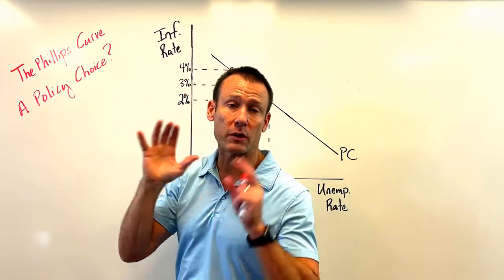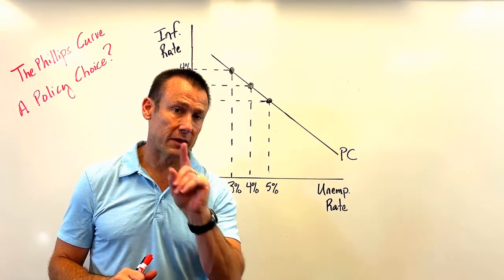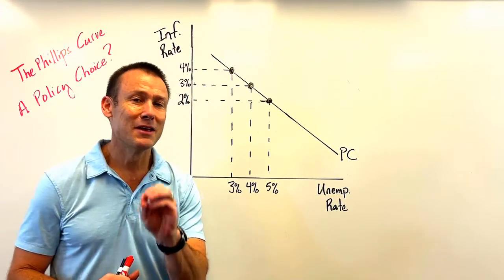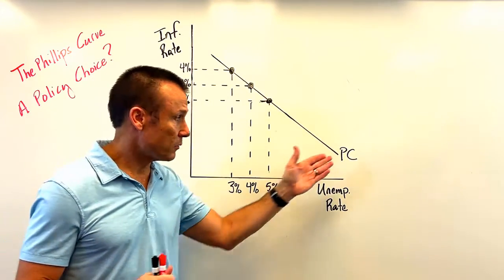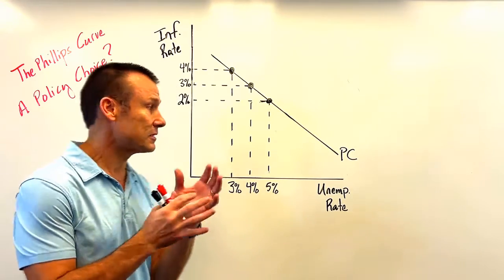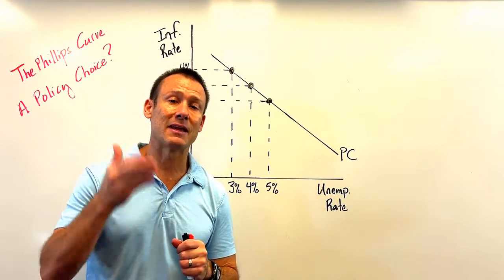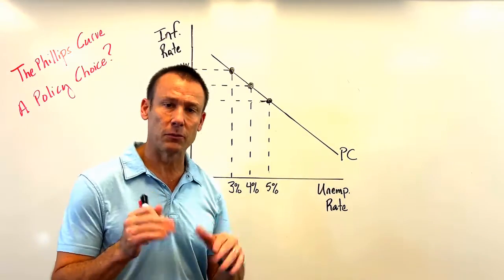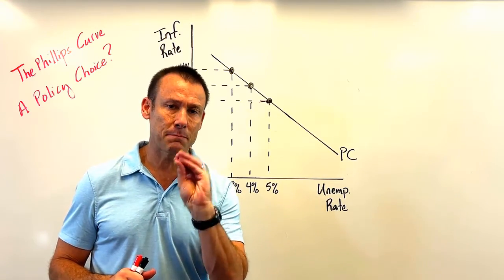We're going back to the origination of the Phillips Curve. The original Phillips Curve was just the Phillips Curve — there was no short-run or long-run Phillips Curve, just a single curve. And it began to be seen as a policy choice. PC for Phillips Curve, PC for policy choice — it was seen as a policy choice.